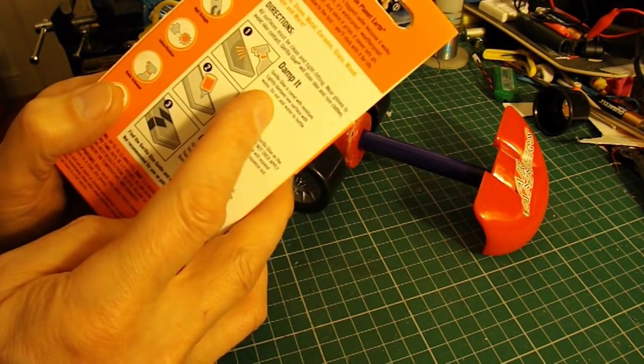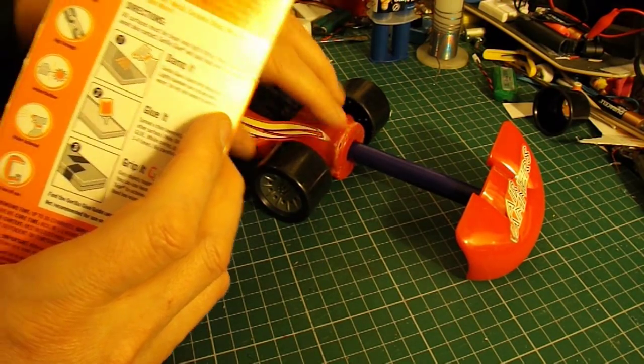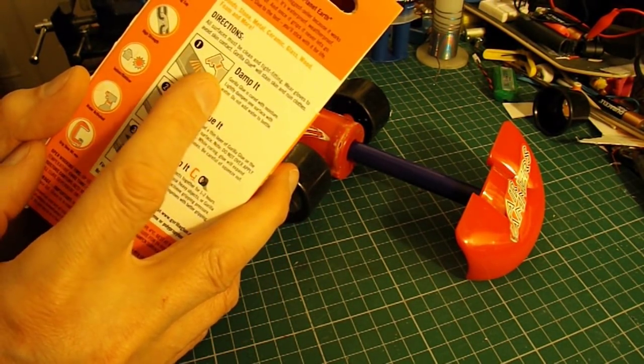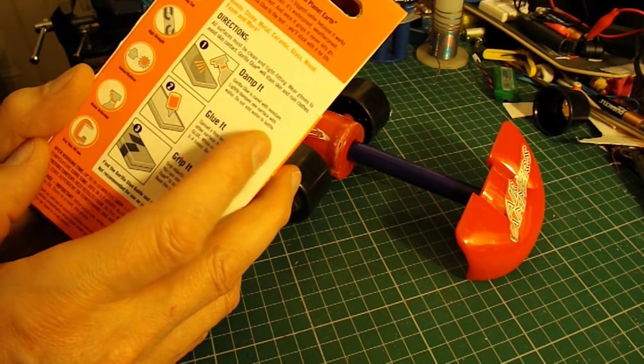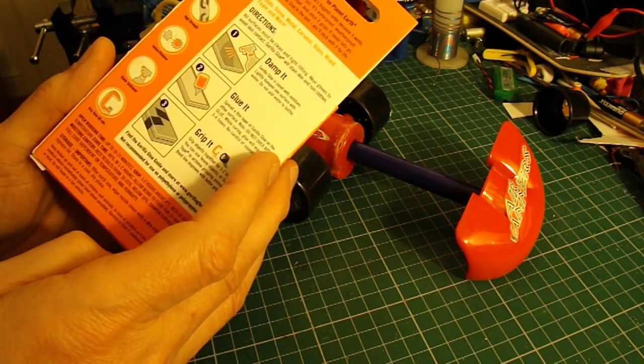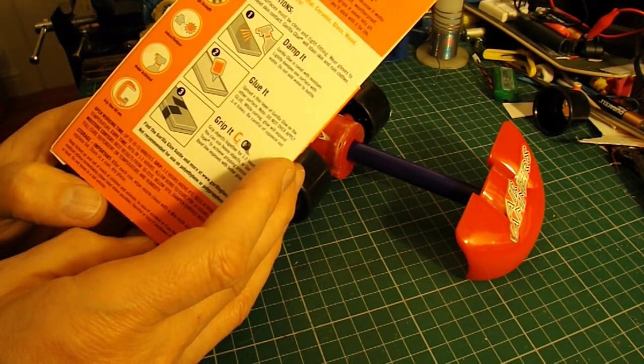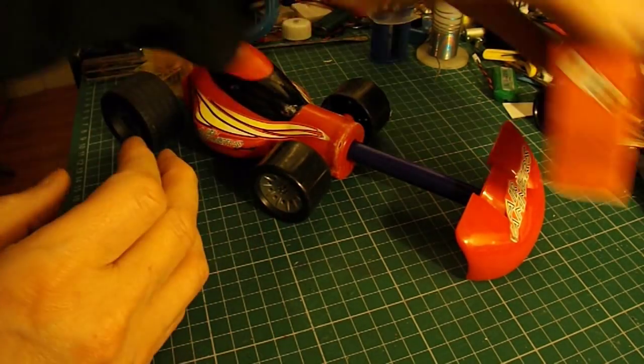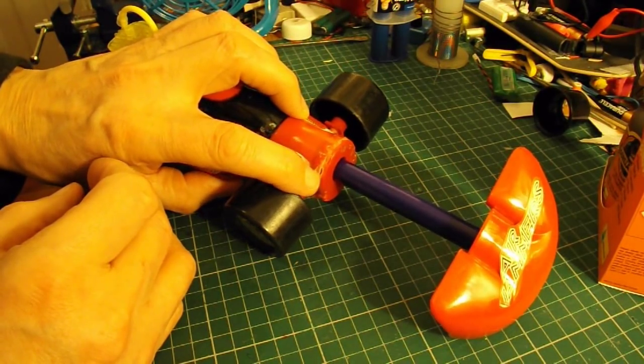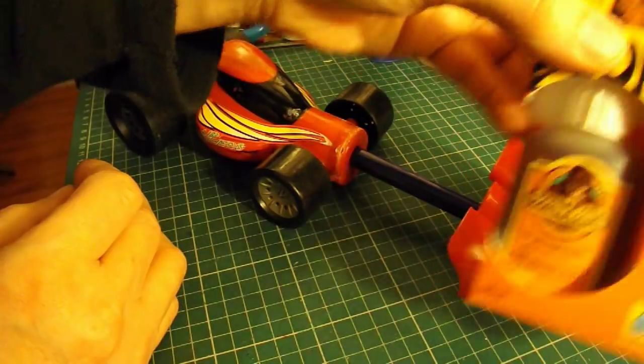Now this stuff obviously needs a clean surface, so I'm going to have to spend some time cleaning it up again to get the old glue off, but you actually dampen the surface slightly because it reacts with moisture and that's what starts it setting. So I'll see if I can get it apart again, clean that UHU glue off it as best I can and then we'll try this stuff.